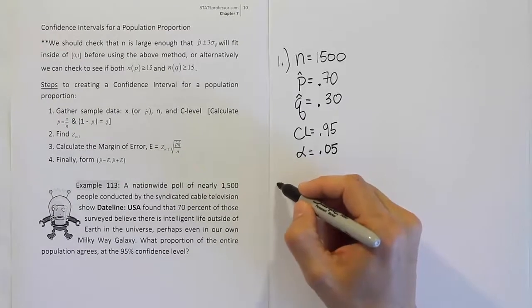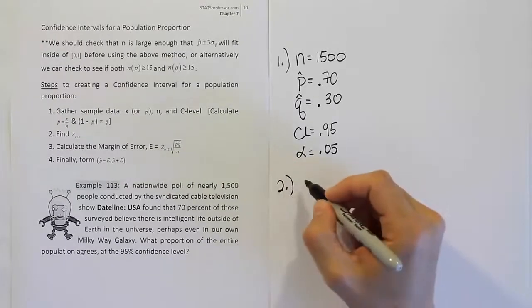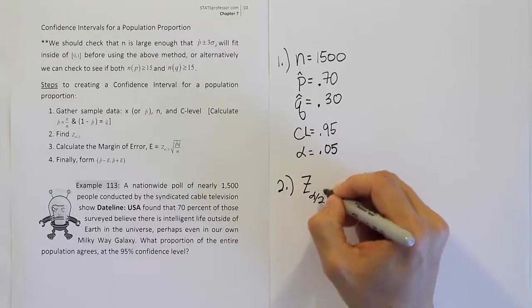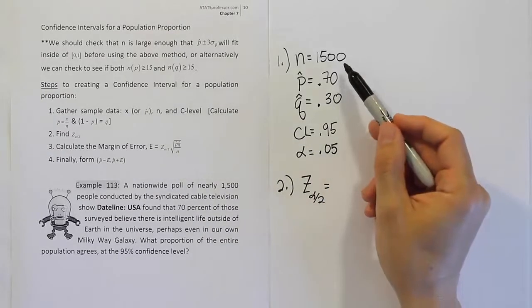Alright, so let's take the next part of the problem to get the z alpha divided by 2 value. In these problems, it will always be z alpha divided by 2 because we're always going to have a very large sample size.